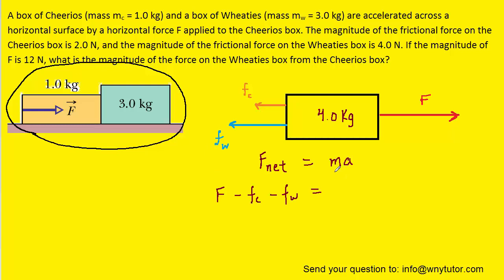And then for the mass, we've noted again that it is four kilograms. We'll proceed to plug in the values for these three forces that were stated in the question. Remember that the applied force was twelve newtons, the frictional force acting on the Cheerios was two newtons, and the frictional force acting on the Wheaties was four newtons.